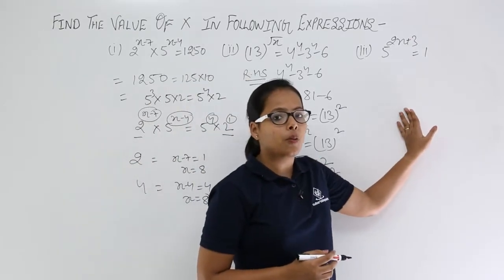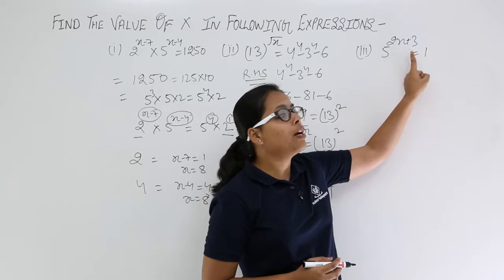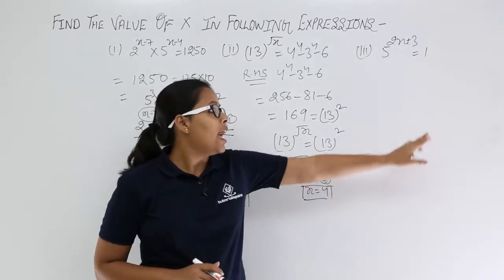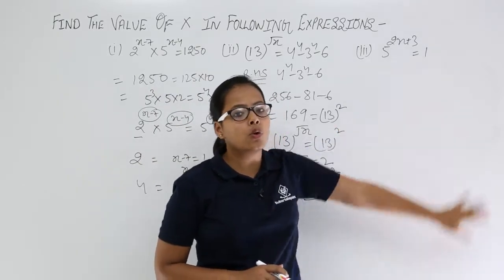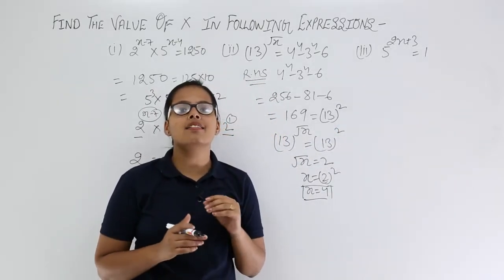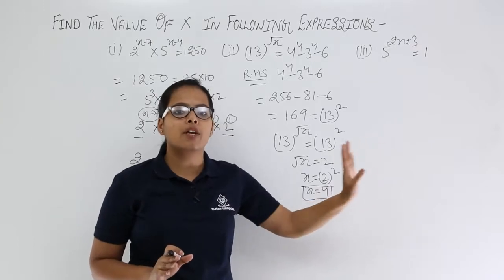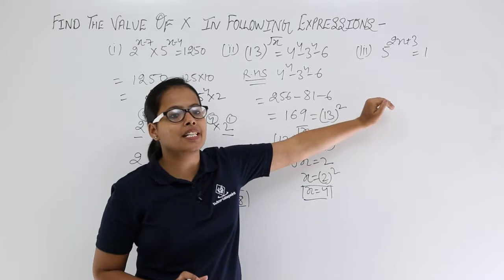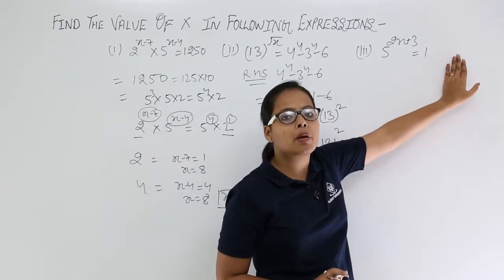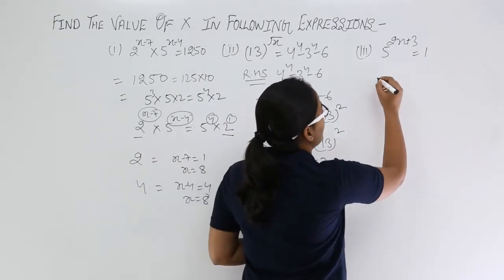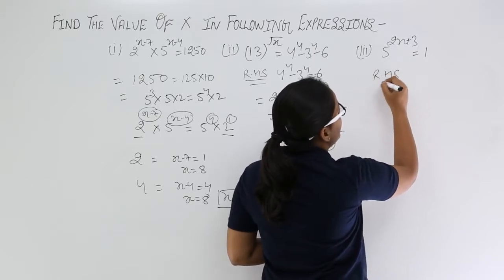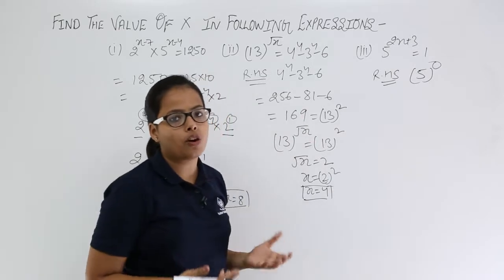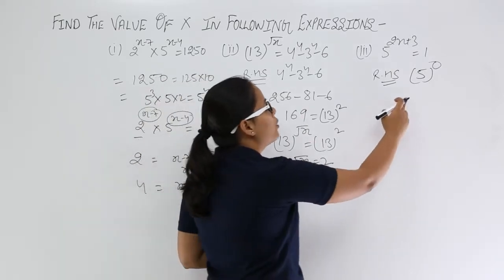Now let's take the third problem: 5 raised to power (2x + 3) equals 1. You must be wondering how to solve this. You know that any base raised to the power 0 equals 1. Since the base on the left hand side is 5, you write the right hand side as 5 raised to power 0, which equals 1.